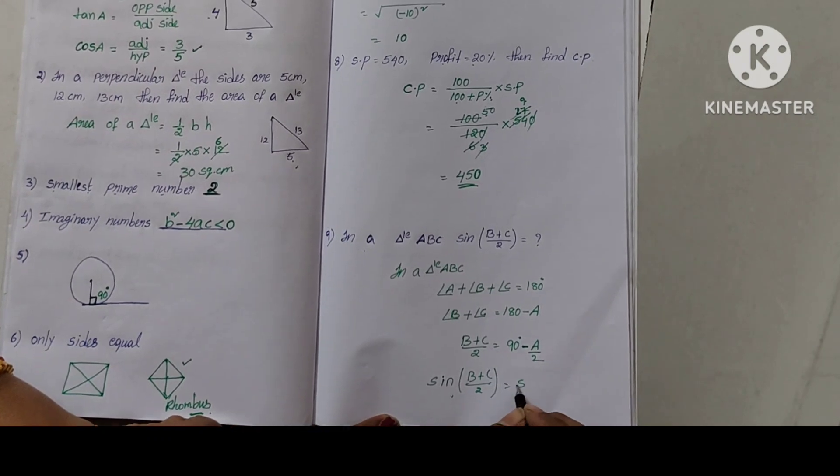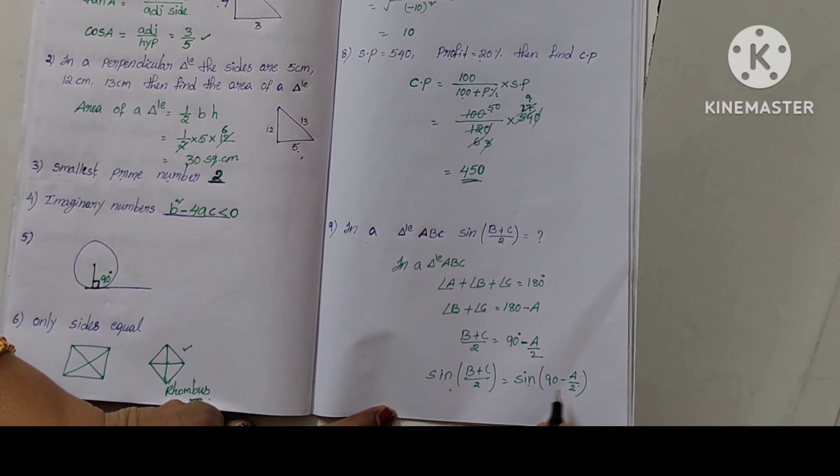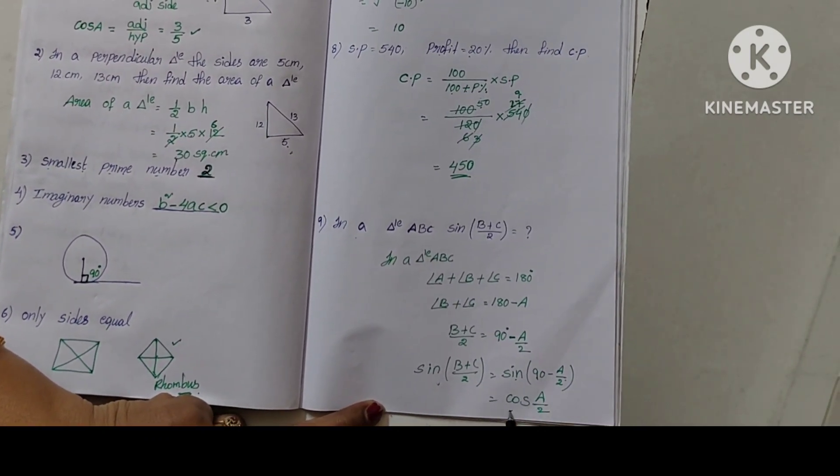Apply sin to both sides: sin (B plus C) by 2 equal to sin (90 minus A by 2), that equal to cos A by 2.